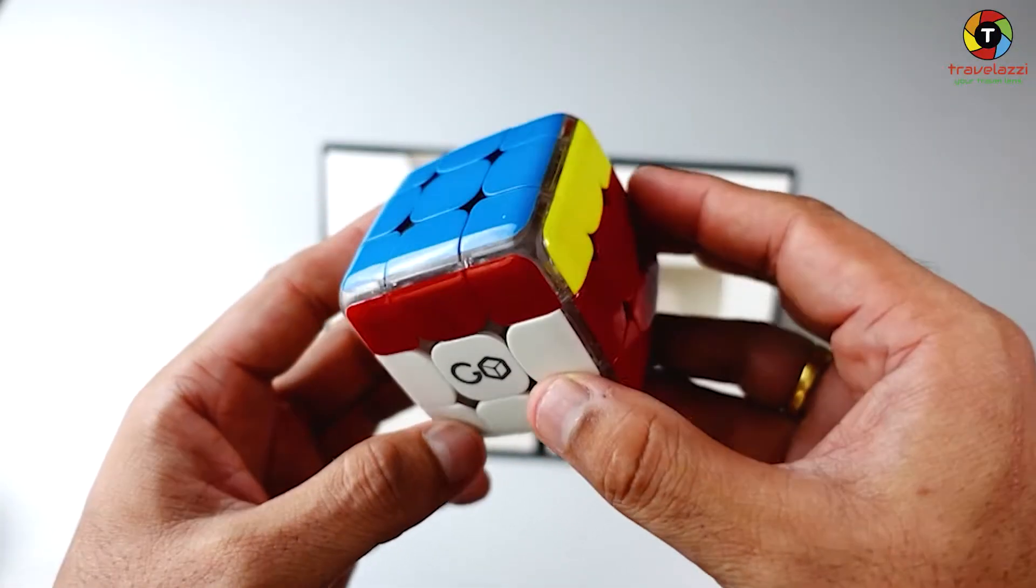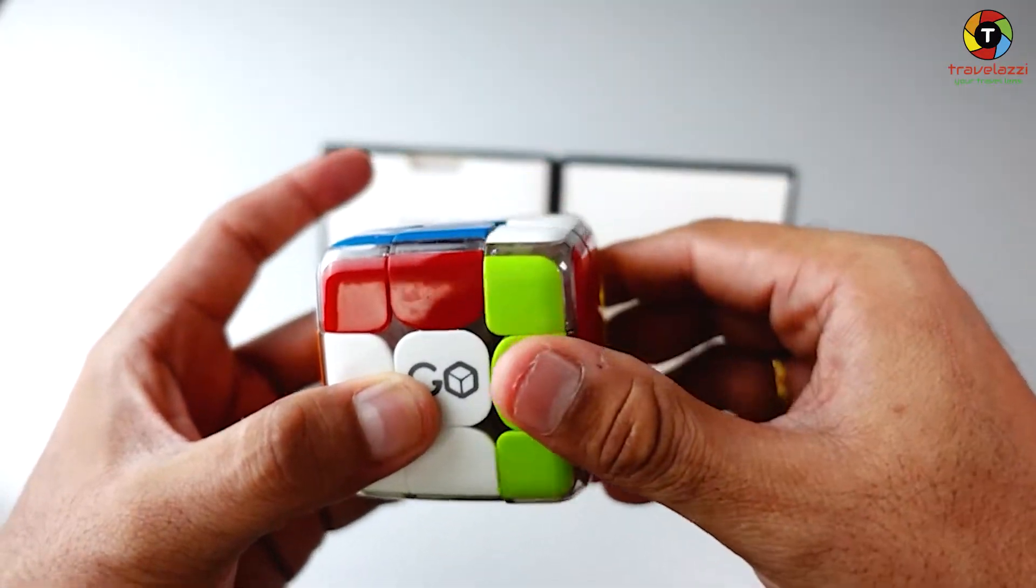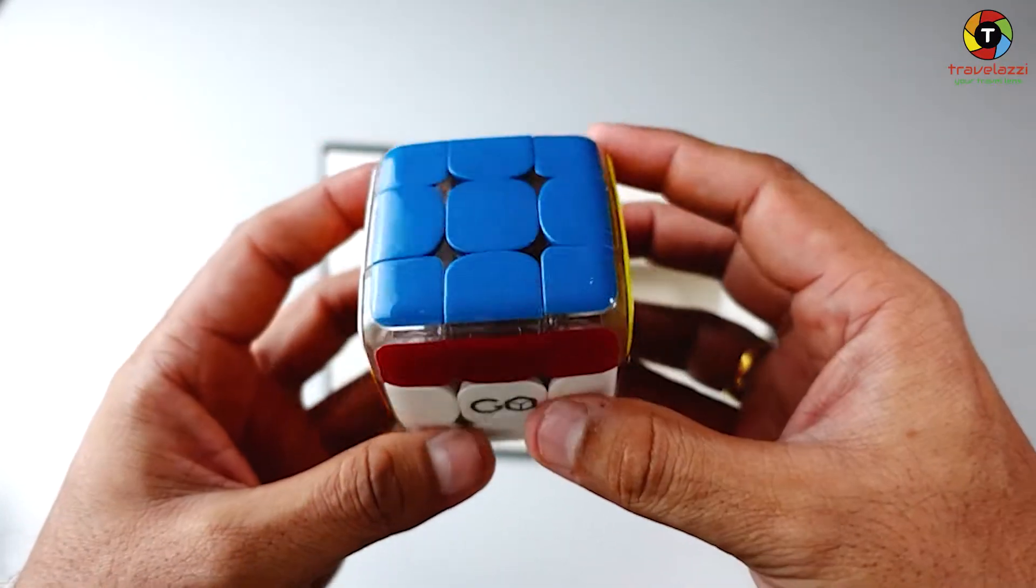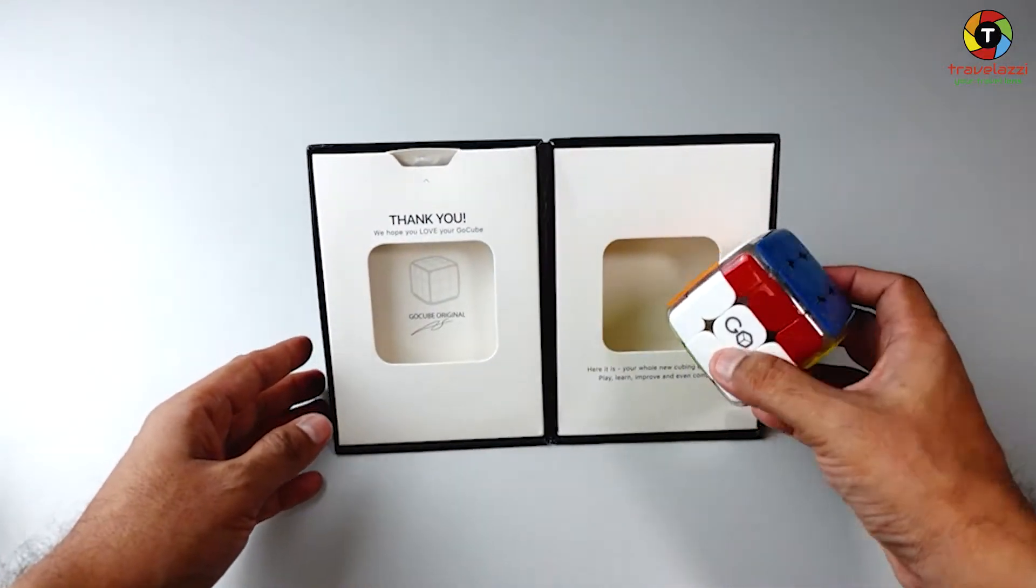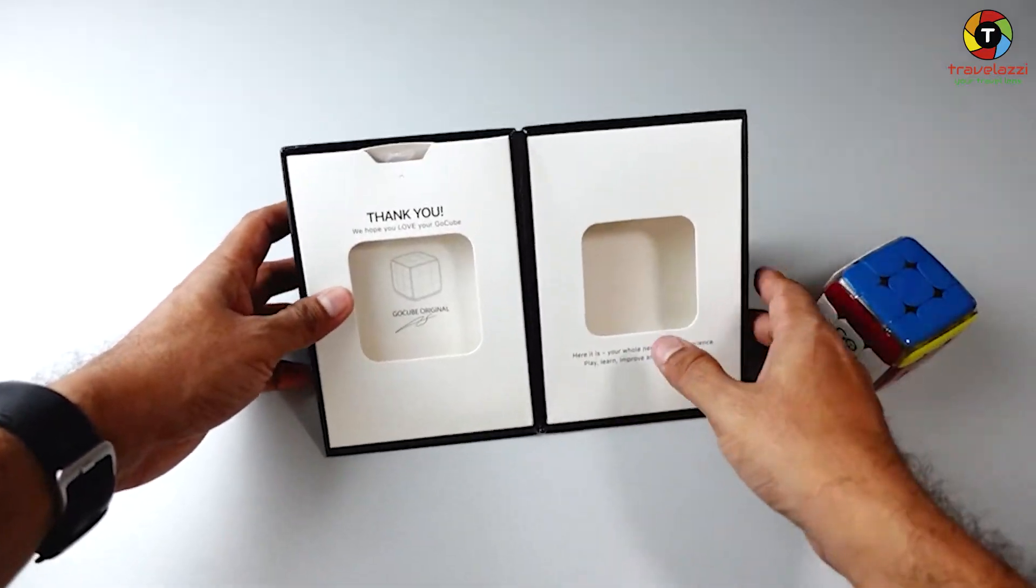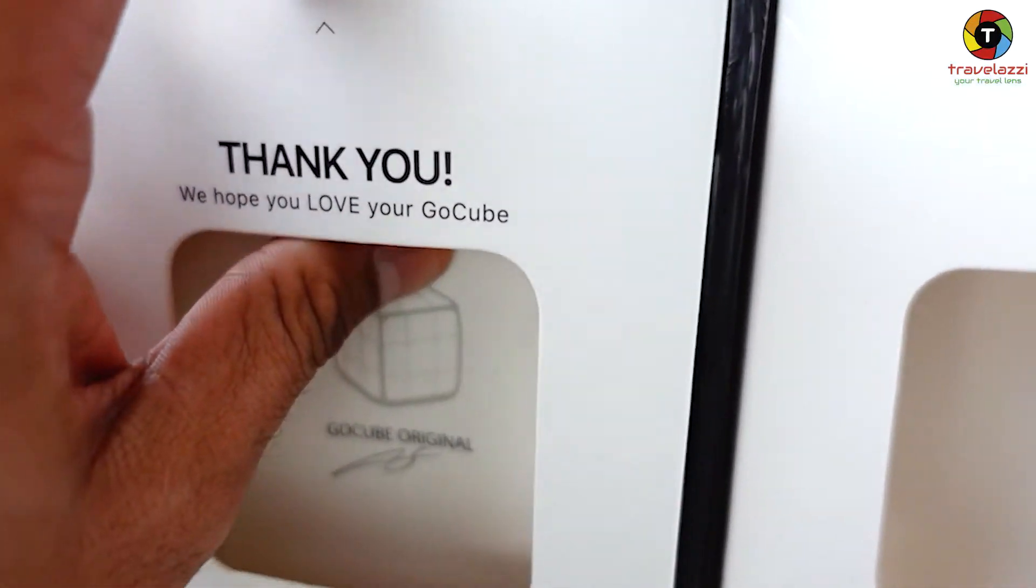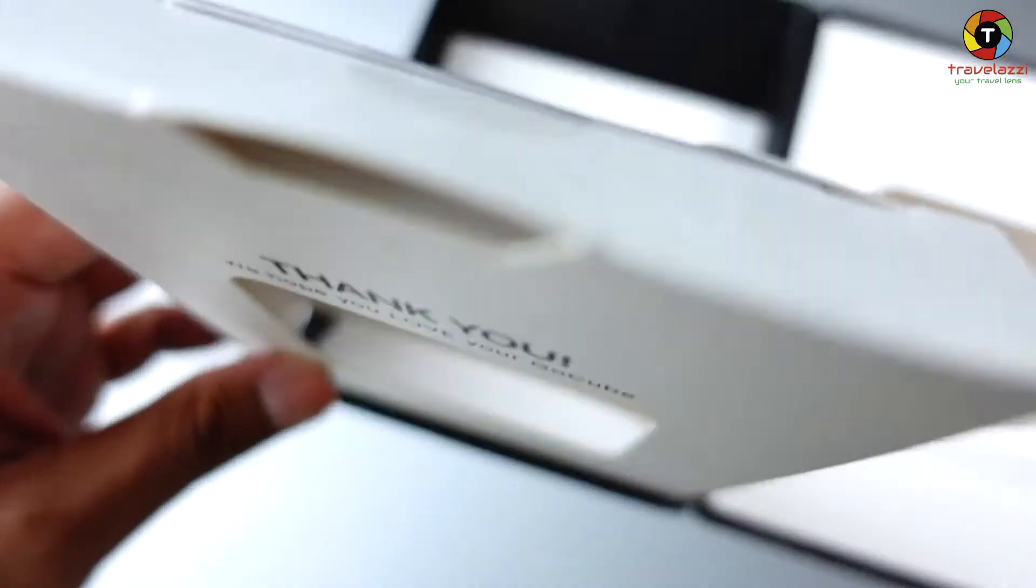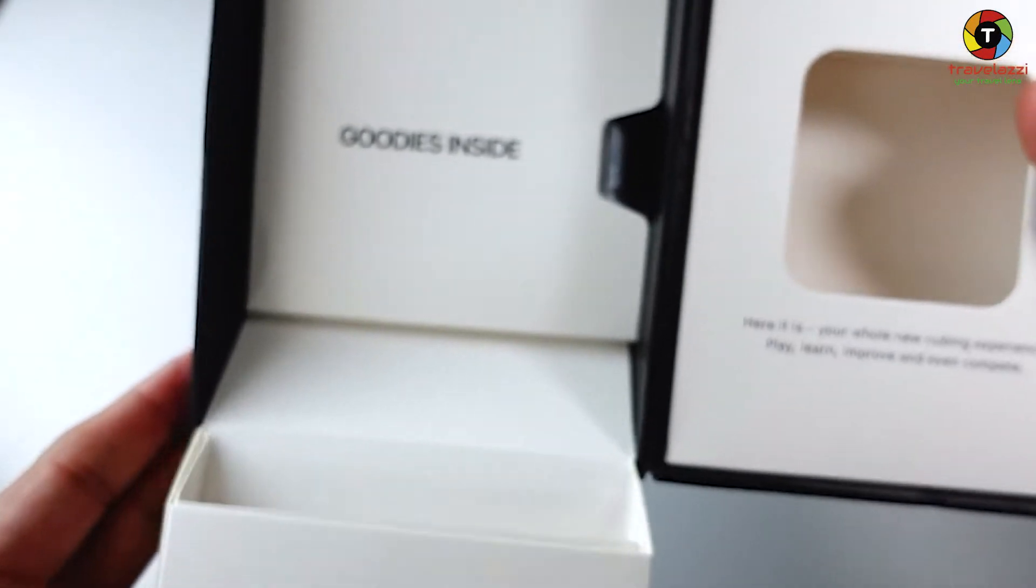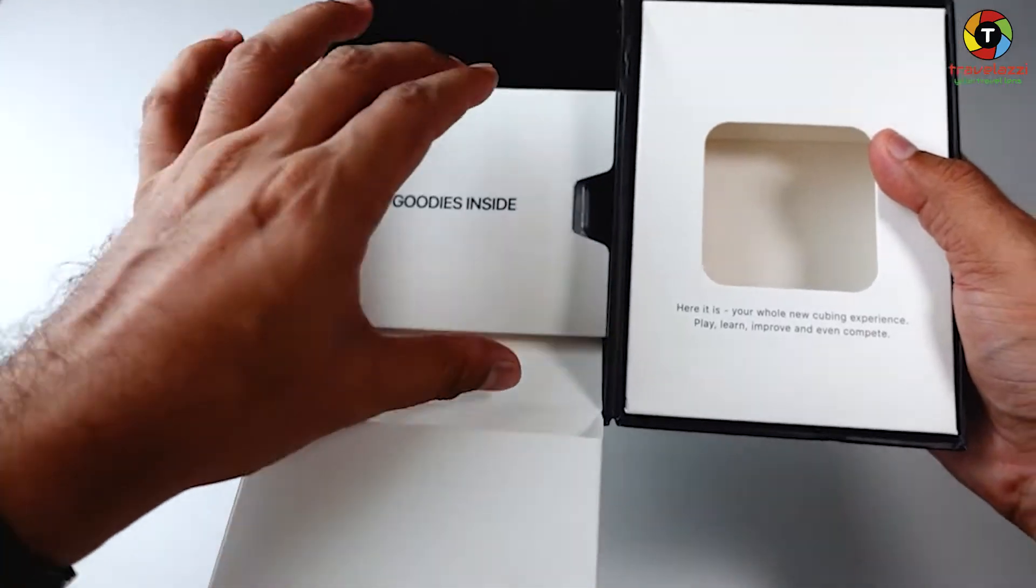Let's see what's there in the box. There is a little arrow telling me to... okay, so you can pull out this part of the box. It says there are goodies inside. Let's see what goodies we have there.